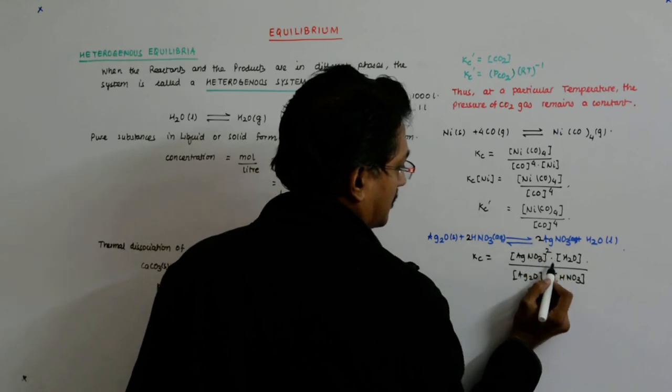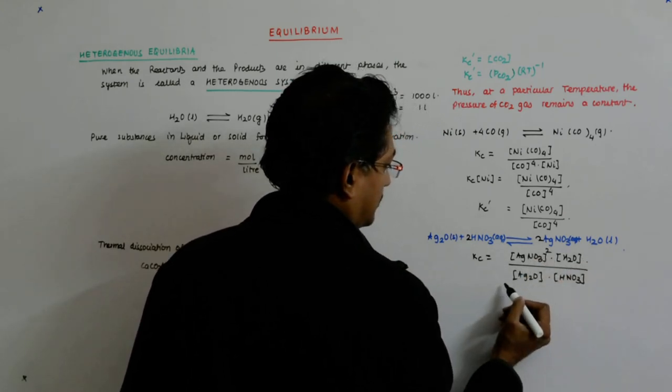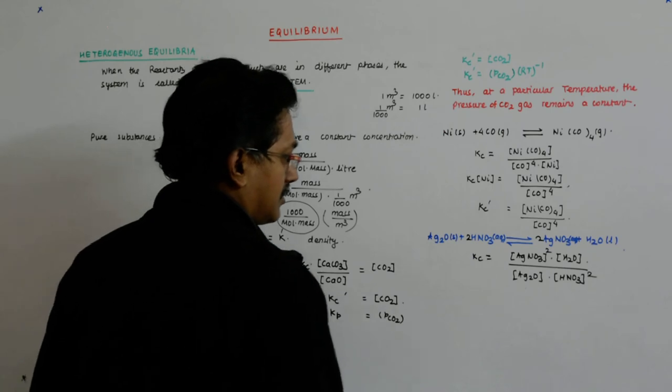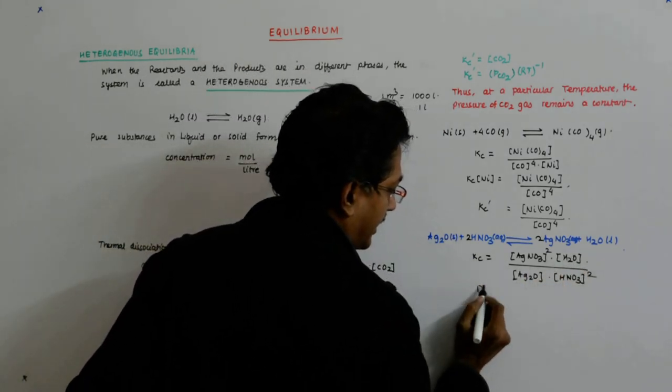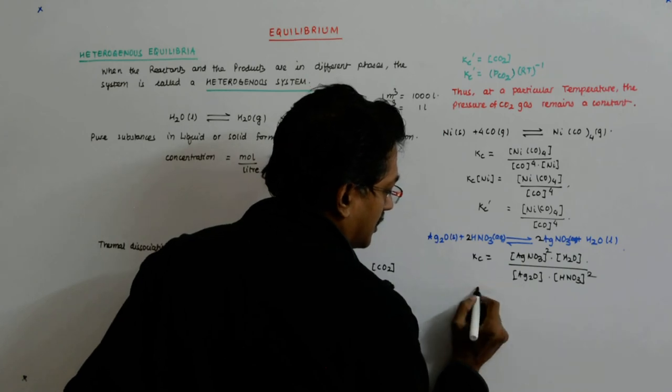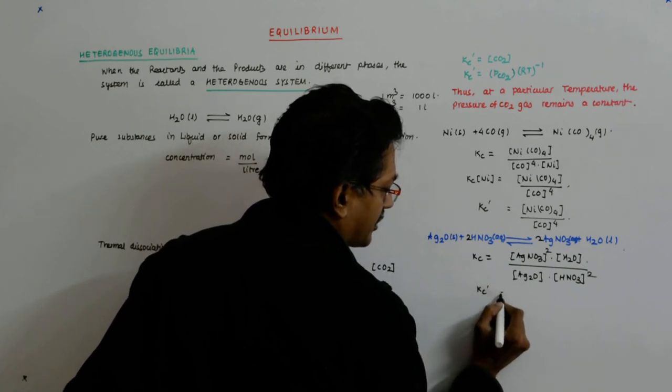Yes, so whole square divided by this. Correct. Now these two are the constants, so they go on this side, and I do not even bother to write them. I straight away write Kc' is equal to...